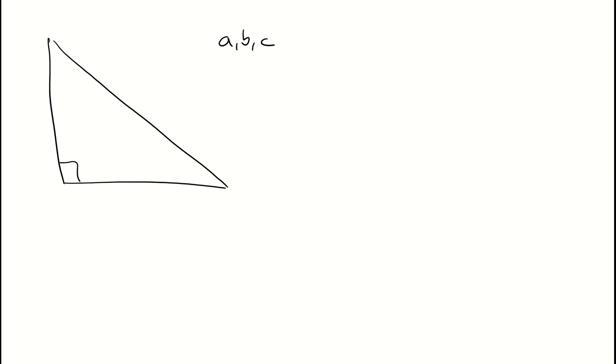Remember with our right angle triangles with Pythagoras, we were looking at labelling our sides A, B and C. Remember C was always our longest side - that was one of our rules - so that would be this side here, our hypotenuse. And then A and B are just our shorter sides, so we could have A here and B here.